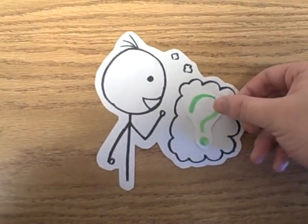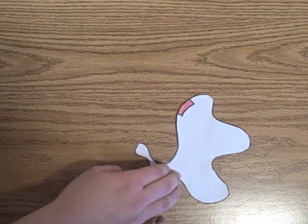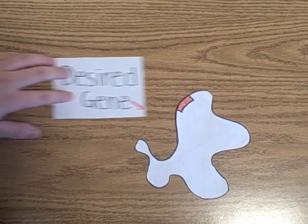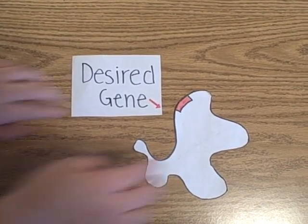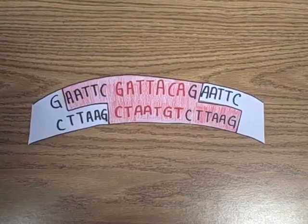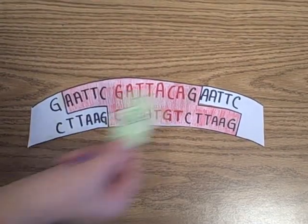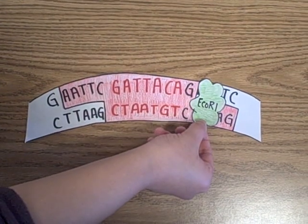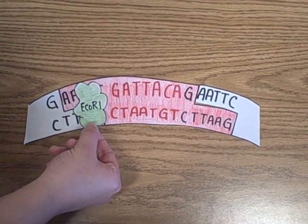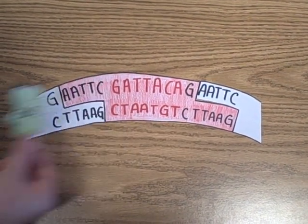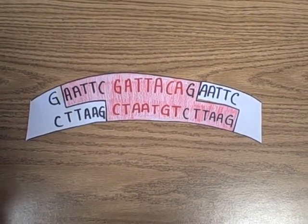What are the molecular techniques for cloning a gene? After isolating and purifying the DNA containing the desired gene, use restriction enzymes, which can cut DNA at specific sites, to separate the desired gene from the rest of the DNA.